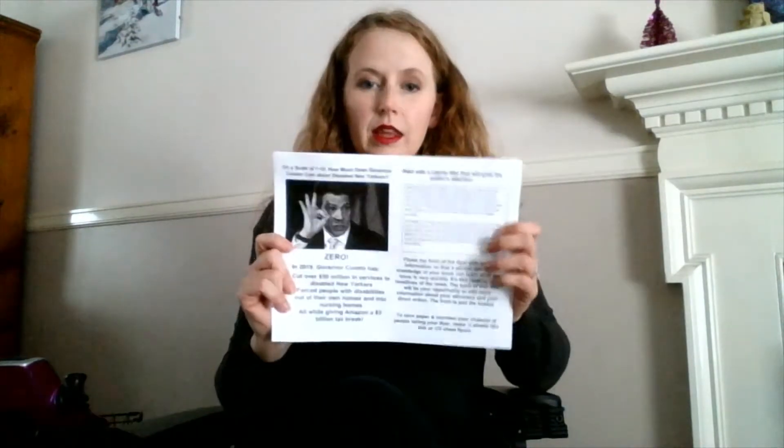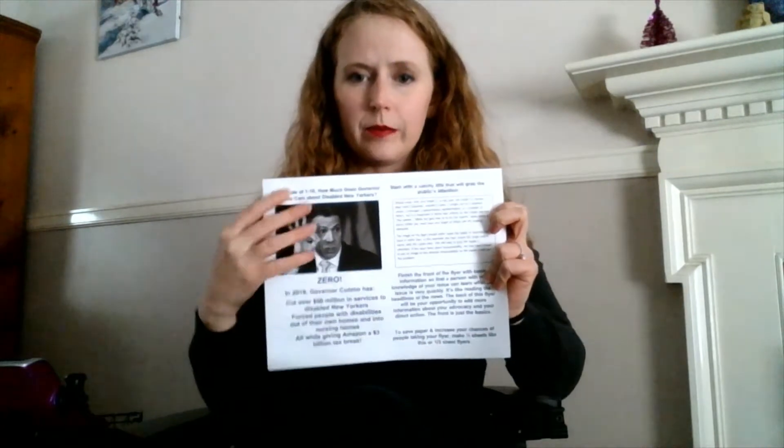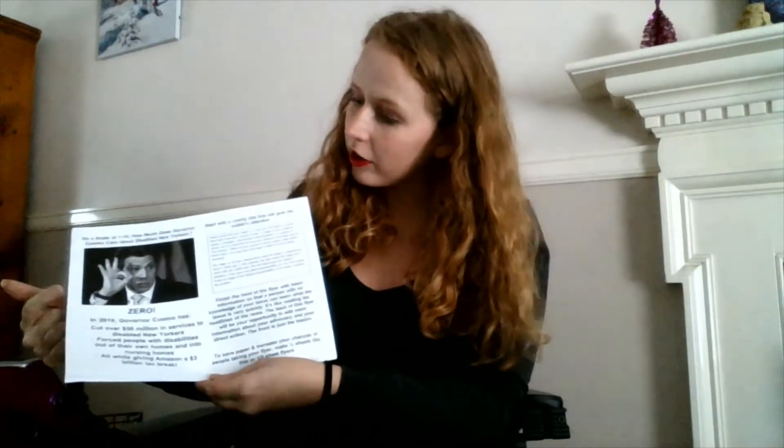The first thing I want to go over today is the flyer. The flyer is a document you'll find on the advocacy and lobbying webpage. It's a web document that has an image of Andrew Cuomo, governor of New York, on it. It starts with: 'On a scale of one to ten, how much does Governor Cuomo care about disabled New Yorkers?' It has an image of him holding up his hand like a zero or an okay sign, and underneath it says zero.